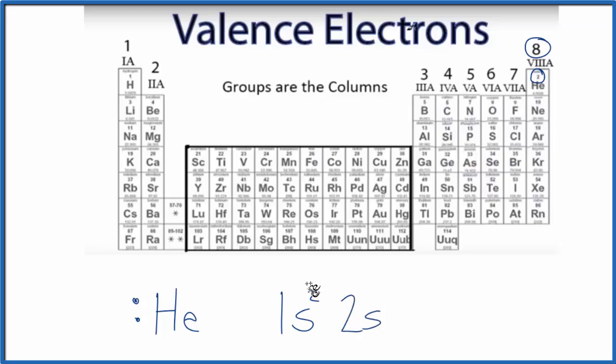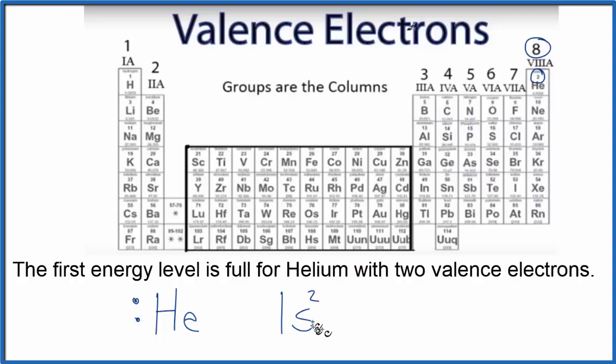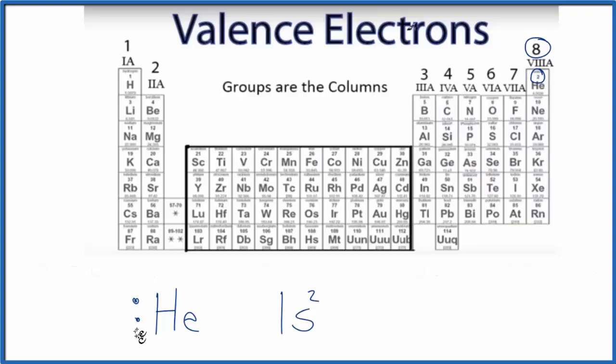We'd start with 2s. But since helium only has two, we have the 1s², those are the two valence electrons for helium. And you can see now why I write two together on this side, because we have this first energy level here for helium.